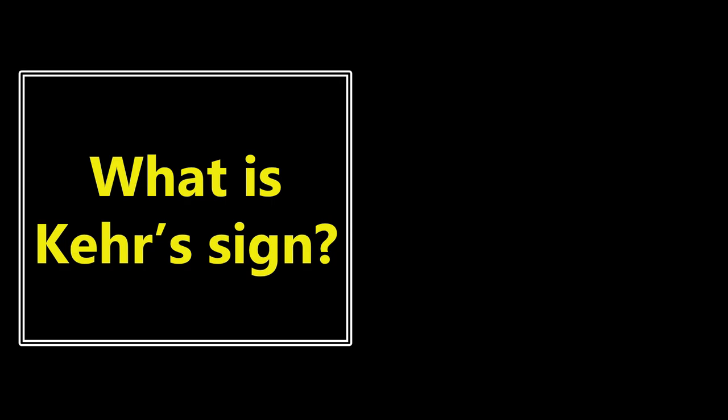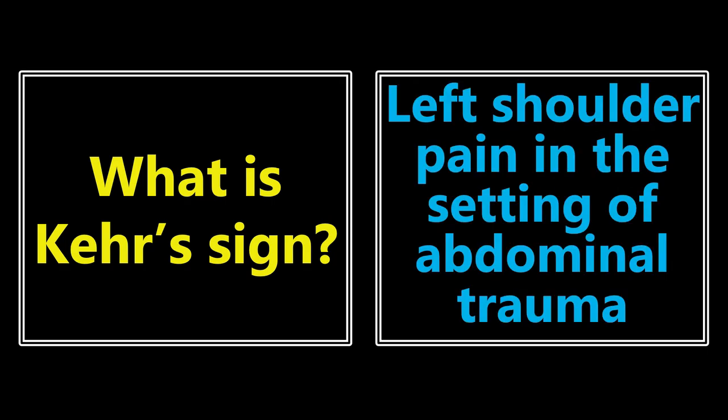What is Kehr's sign? It is left shoulder pain in the setting of abdominal trauma, and this is classically associated with splenic rupture. So if you have a patient that comes in with an MVC or some type of blunt abdominal trauma and they're having a lot of left shoulder pain, you want to be thinking about potentially a splenic rupture.